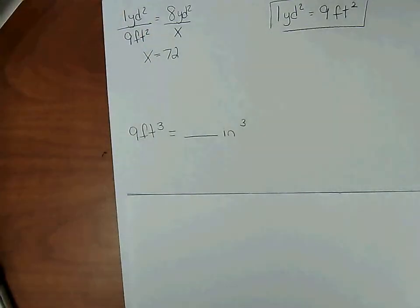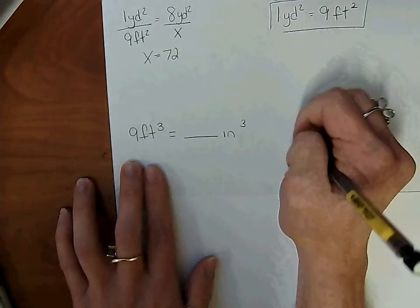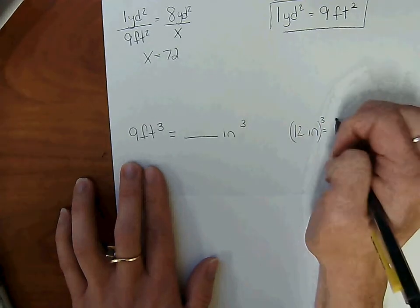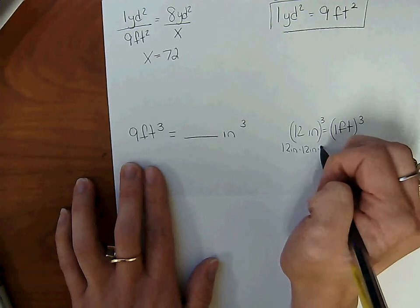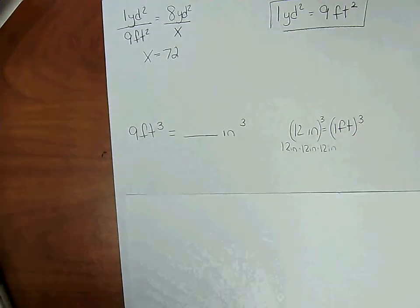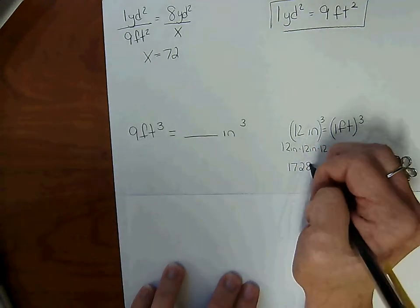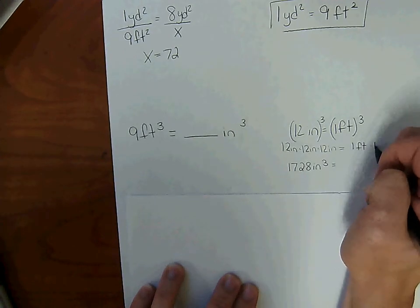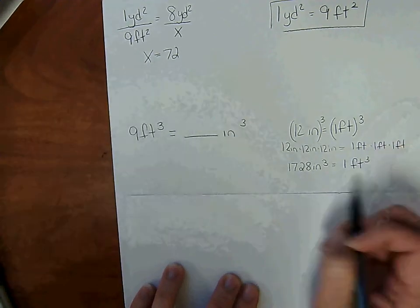Same is true if you're doing cubed units. Again, we need to think about the fact we know about inches and feet. There's 12 inches in 1 foot. Cube both sides. So this means 12 inches times 12 inches times 12 inches. So 1,728 inches cubed equals, and this is 1 foot times 1 foot times 1 foot, which is 1 foot cubed. Here is our fact.